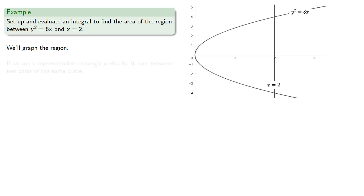And note that if we run a representative rectangle vertically, it runs between two parts of the same curve. And while we could find the area this way, it's generally harder.